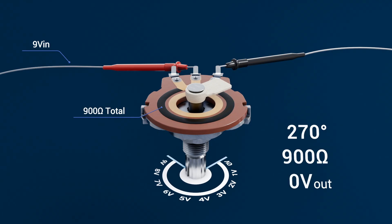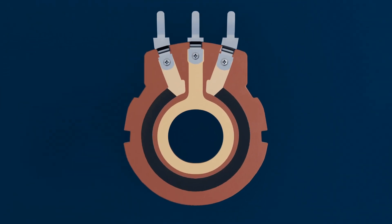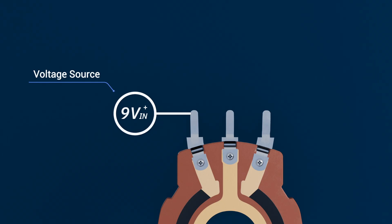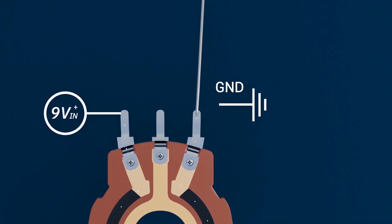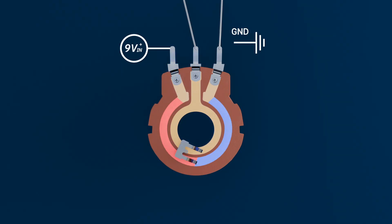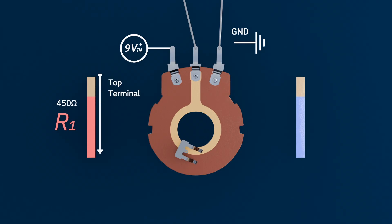Let's visualize how a potentiometer works at a deeper level. Let's look at a curved resistance track, a continuous strip of carbon or conductive plastic. We connect one end of the track to the positive side of a voltage source and the other end to ground. That means the full supply voltage appears across the entire length of the resistive element. Now we have the wiper, a small metal arm that slides along that track. Wherever the wiper sits, it divides the total resistance into two sections: R1 from the top terminal to the wiper, and R2 from the wiper to ground.